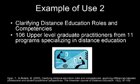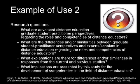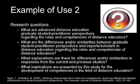The second study was called 'Clarifying Distance Education Roles and Competencies: Exploring Differences Between Professional and Student Practitioner Perspectives.' It involved 106 upper-level graduate students from 11 different programs around the country who specialized in distance education, examining what they felt were the necessary roles and competencies. The research questions were: what are advanced distance education graduate student practitioner perspectives regarding roles and competencies; what are the differences and similarities between graduate student perspectives and expert scholars; what explanations exist for differences in responses from current and previous studies; and what implications does this study present for development of competencies in distance education?